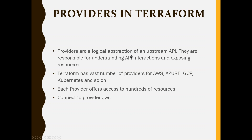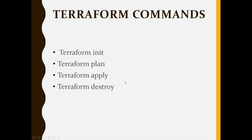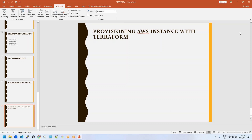Providers are a logical abstraction of an upstream API — they are responsible for understanding API interactions. You can create EC2 instances, S3 buckets, RDS, and more with Terraform. Terraform has a vast number of providers like AWS, GCP, Azure, and so on. Each provider gives you access to hundreds of resources. These are some of the Terraform commands: Terraform state, output values — we'll go through each of them. First, let us install Terraform.